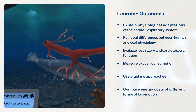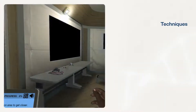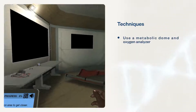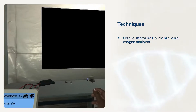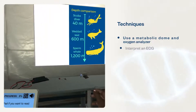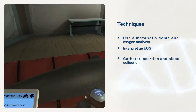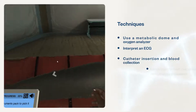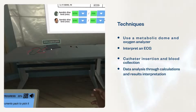Students will compare energy costs of different forms of locomotion. Techniques used include: using a metabolic dome and oxygen analyzer to collect oxygen consumption data, interpreting an ECG, catheter insertion and blood collection at different time points, and data analysis through calculations and results interpretation.